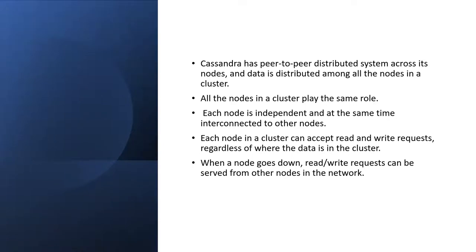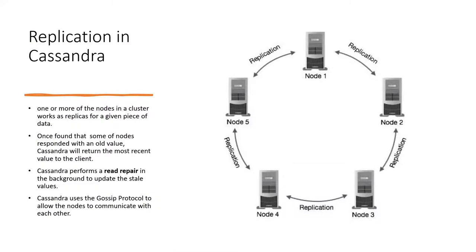Cassandra has a peer-to-peer distributed system across its nodes. The data is distributed on all nodes in the cluster, and all nodes play the same role — each node is independent yet interconnected. Every node in the cluster can handle read and write requests regardless of where the data is in the cluster. If a node goes down, read and write requests can be served by other nodes, so it is always highly available. In this diagram you can see five nodes, and data is getting replicated among all of them.